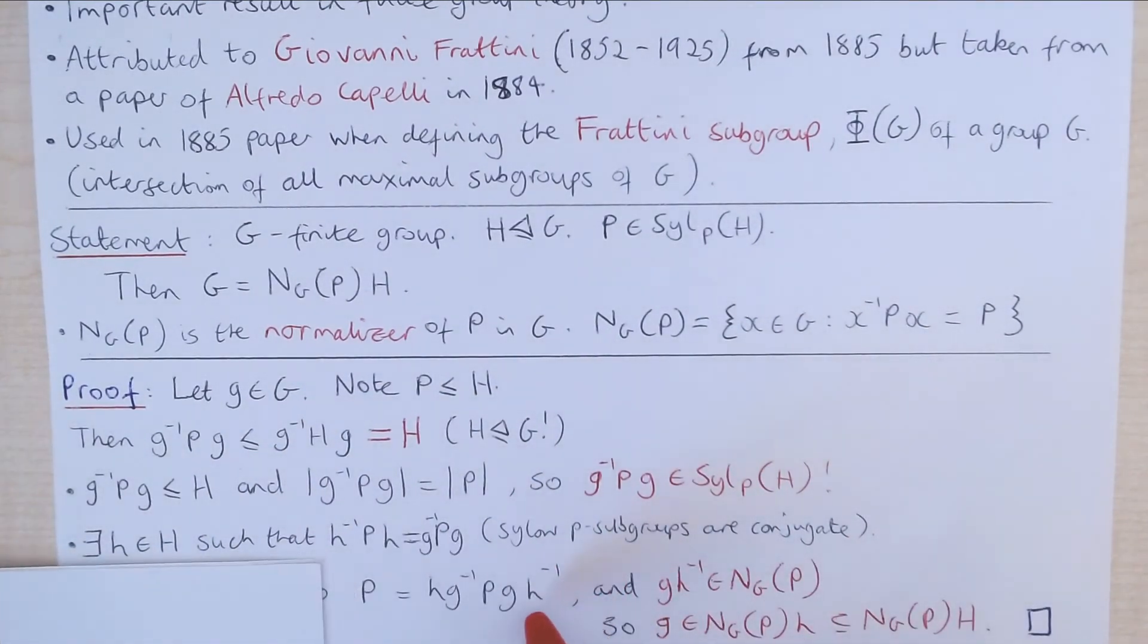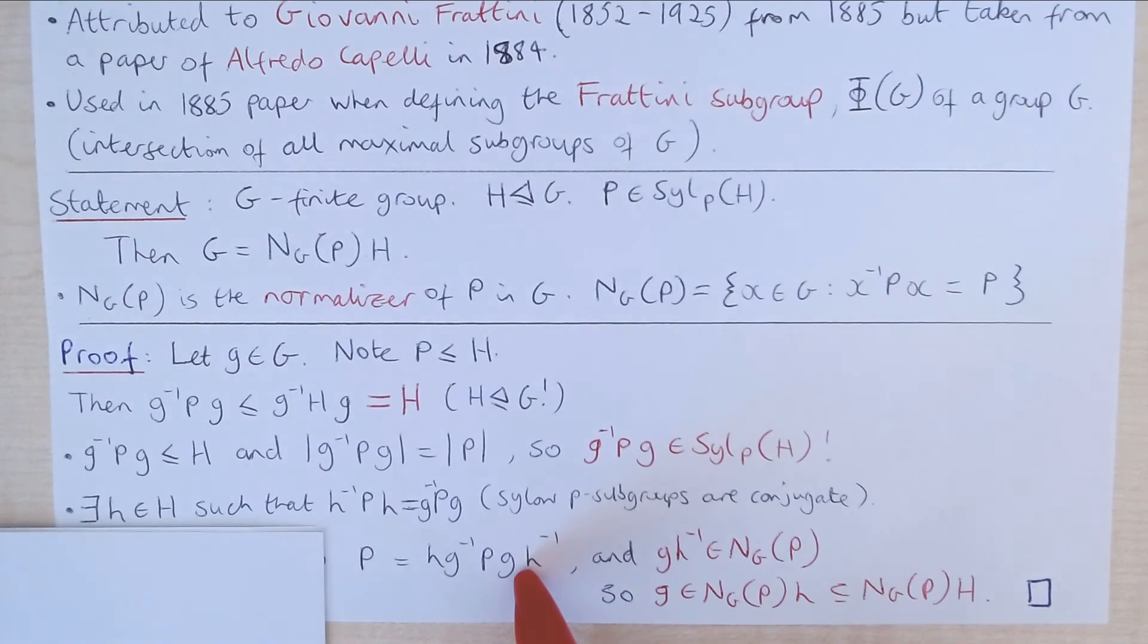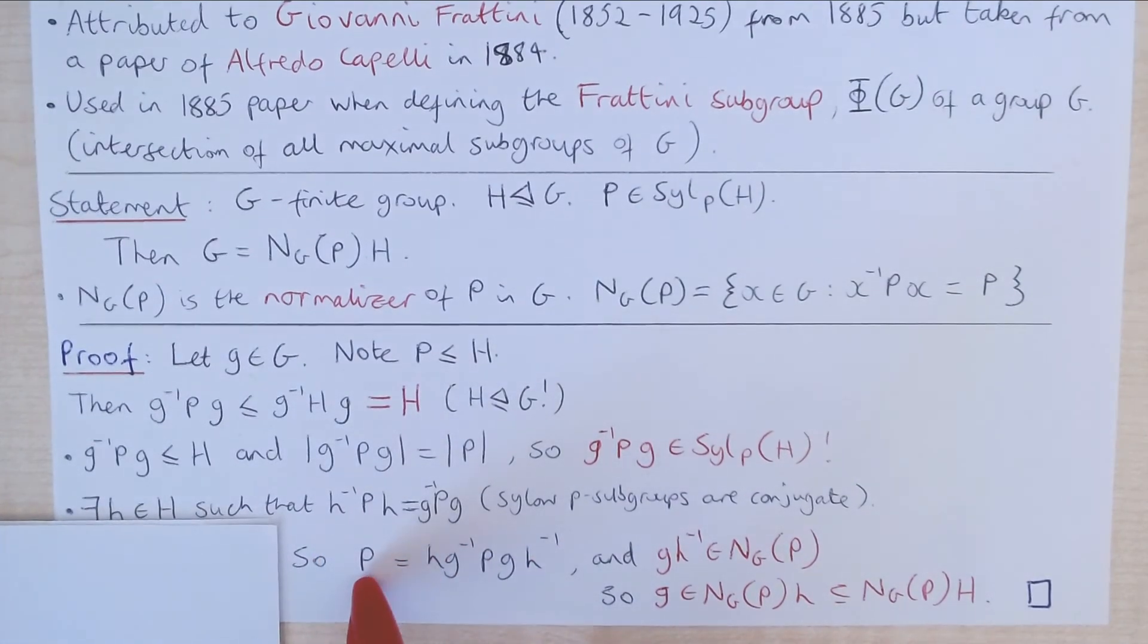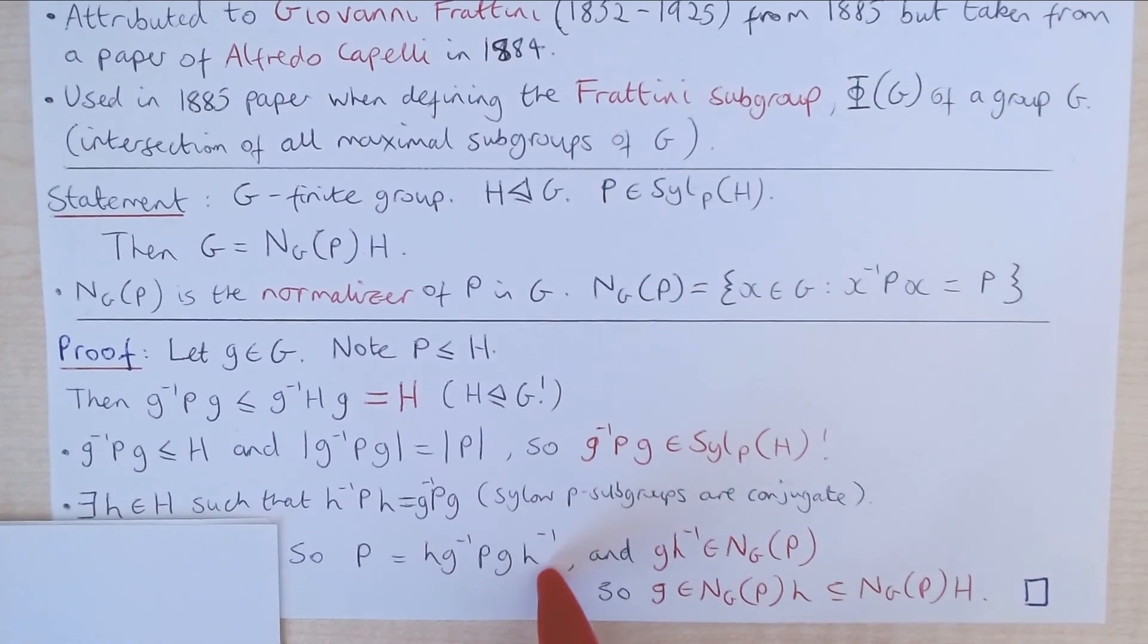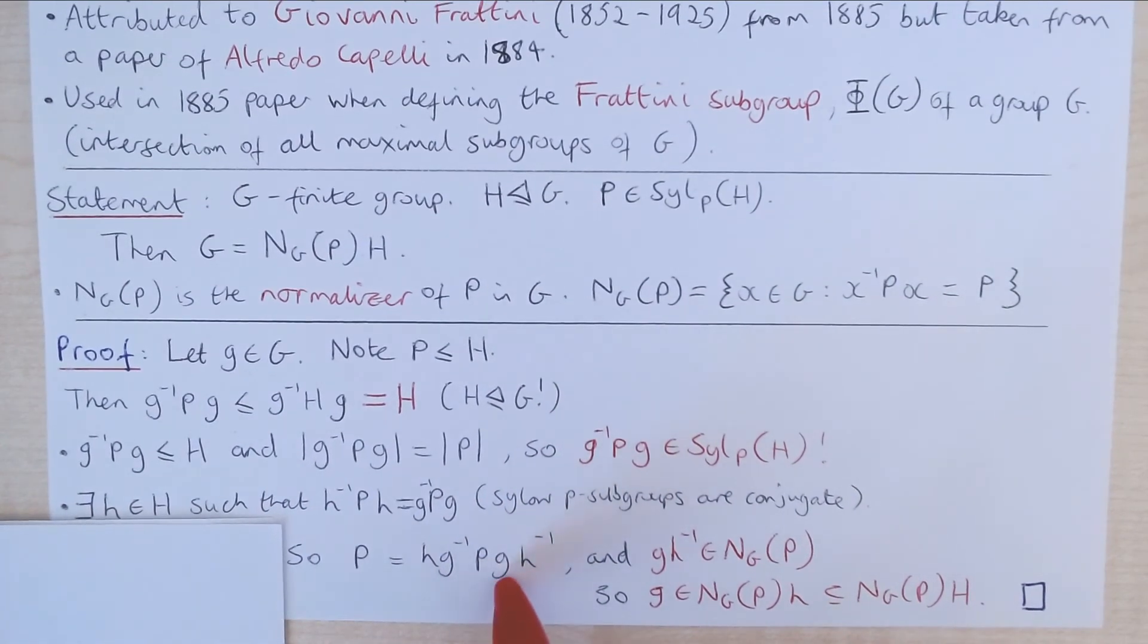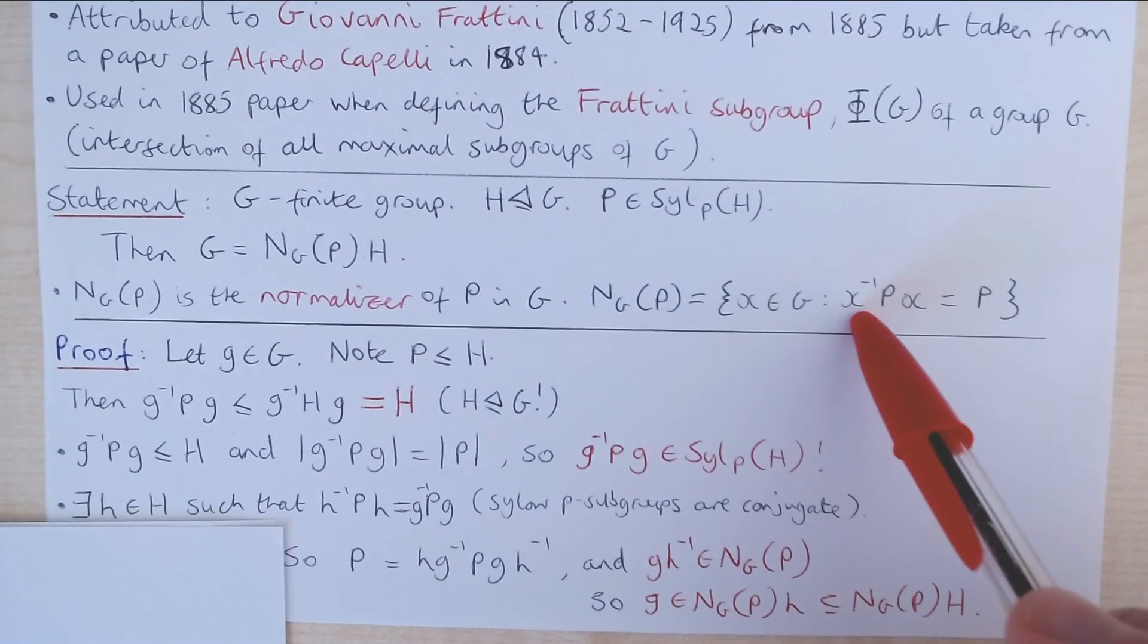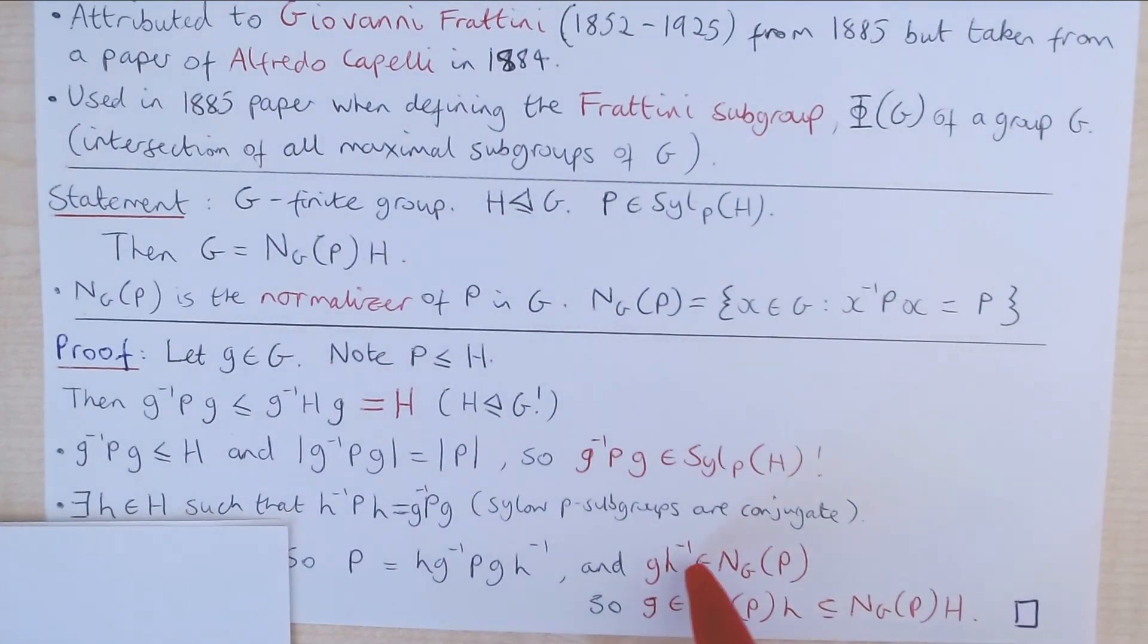Finally, if we conjugate both sides by H inverse, we get that the subgroup P equals HG inverse PGH inverse. In other words, the element GH inverse is in this normalizer by this definition.